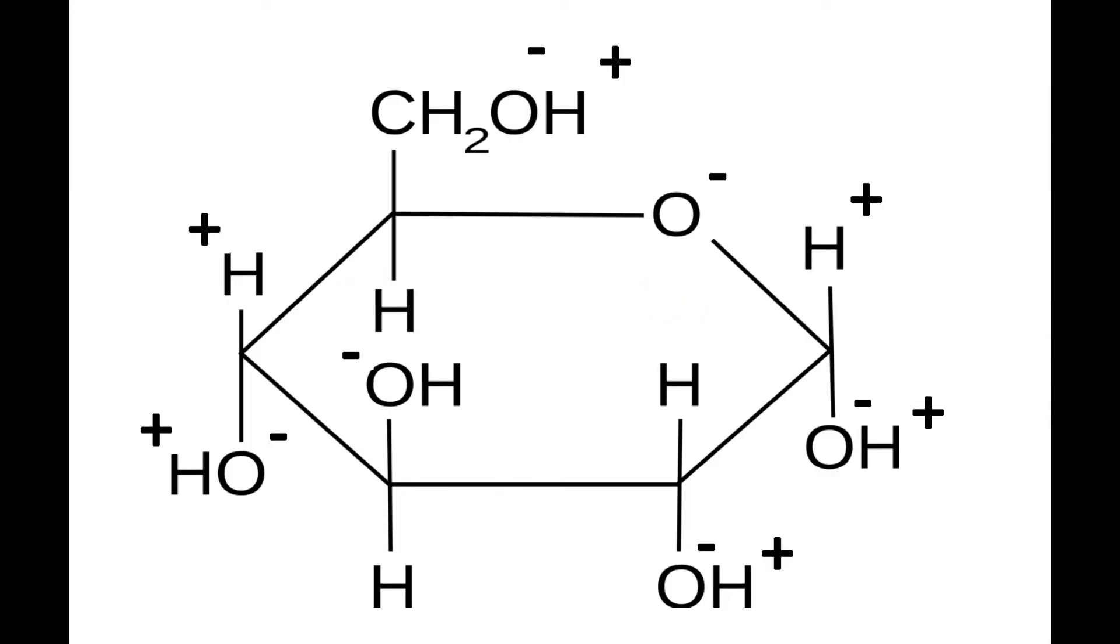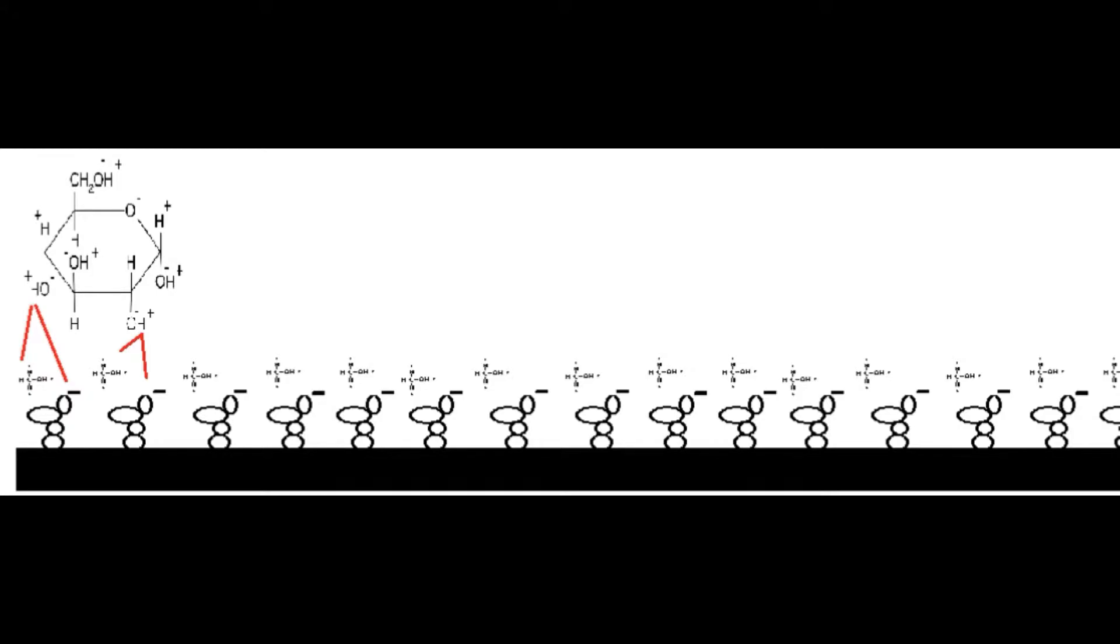An example of this is glucose. Glucose is mildly polar, and so a polar column and non-polar solvent will lead to it being held onto by more of the column's surface. This would slow it down.